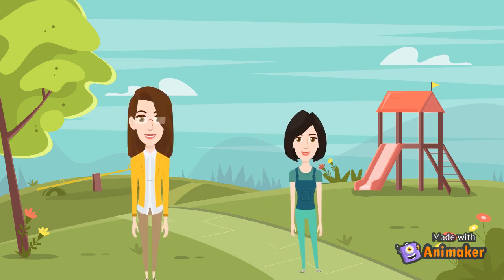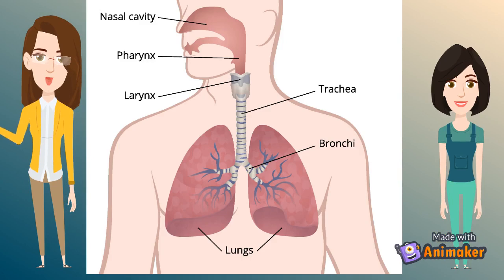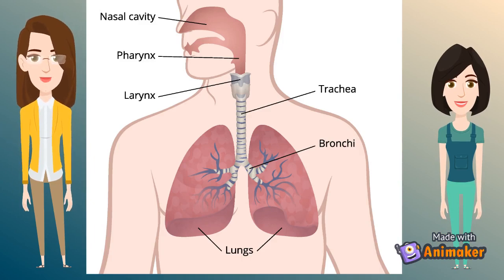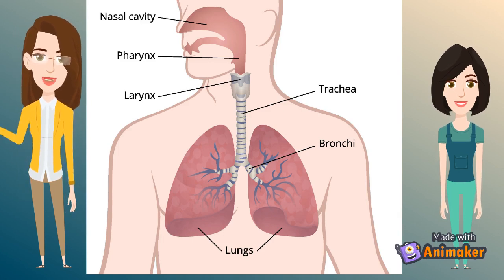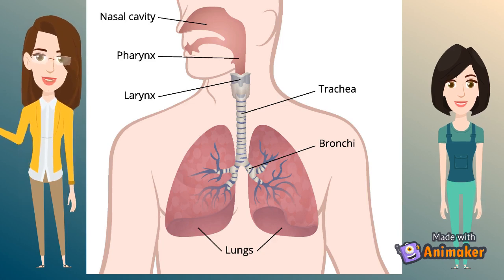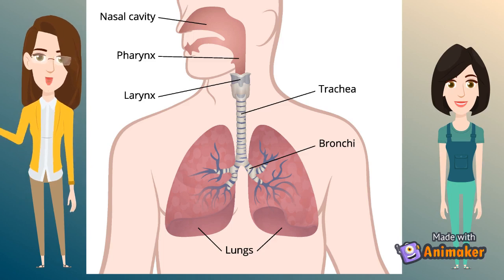Ma'am, please explain the respiratory system in detail. The respiratory system consists of a group of organs and tissues that help us to breathe. Apart from lungs, they also contain muscles and a vast network of blood vessels that facilitate the process of respiration. The various organs involved are the nasal cavity, larynx, pharynx, trachea, bronchi, and a pair of lungs.